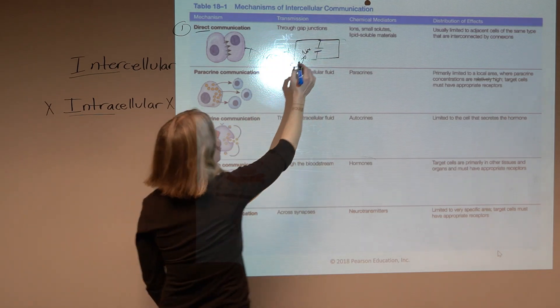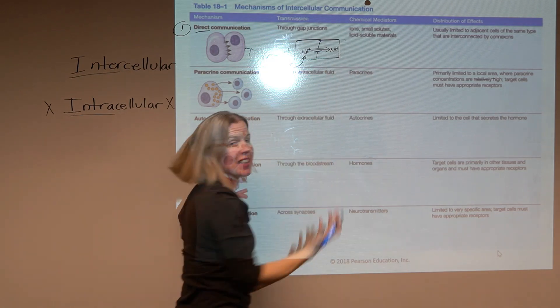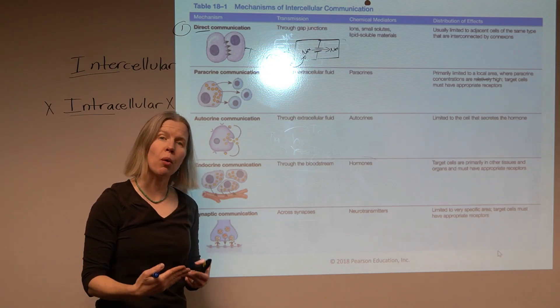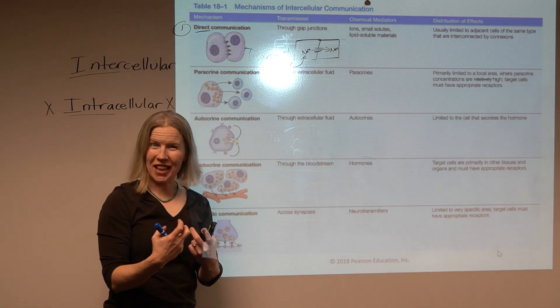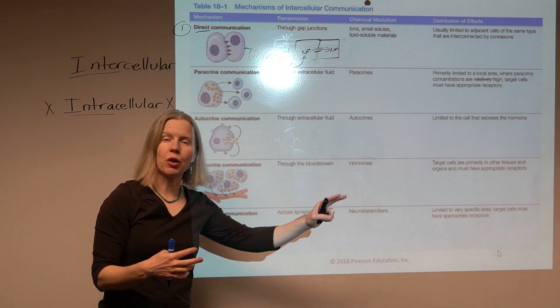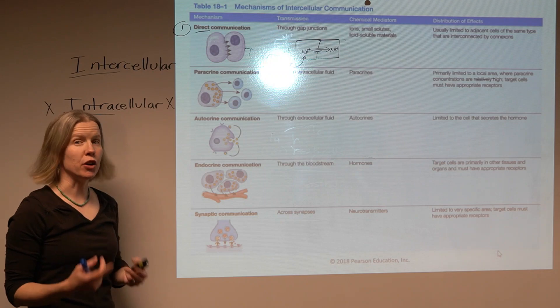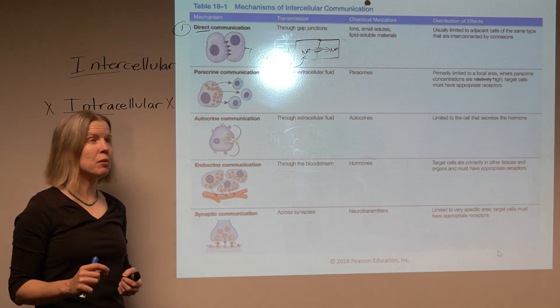...that sodium can now flow through a gap junction into the neighboring cell. There's this direct line of communication. This is really important in how the heart contracts, how it's able to beat more or less as one. That sodium just flows freely through all these connected cells and they can depolarize in unison. So that is direct communication.